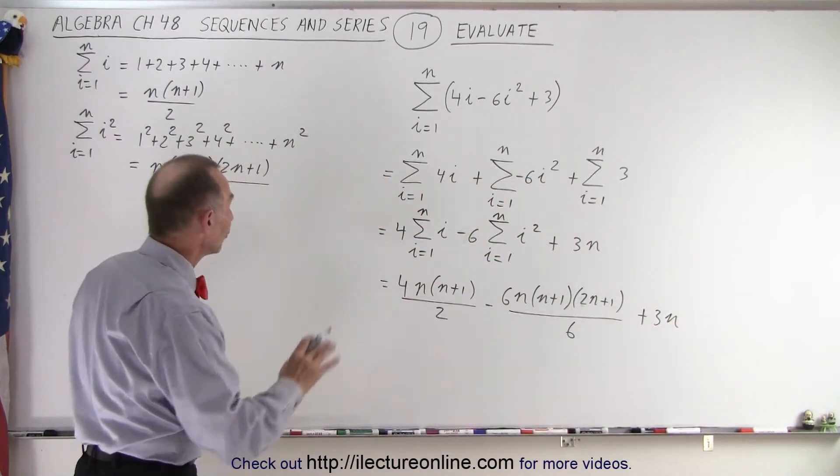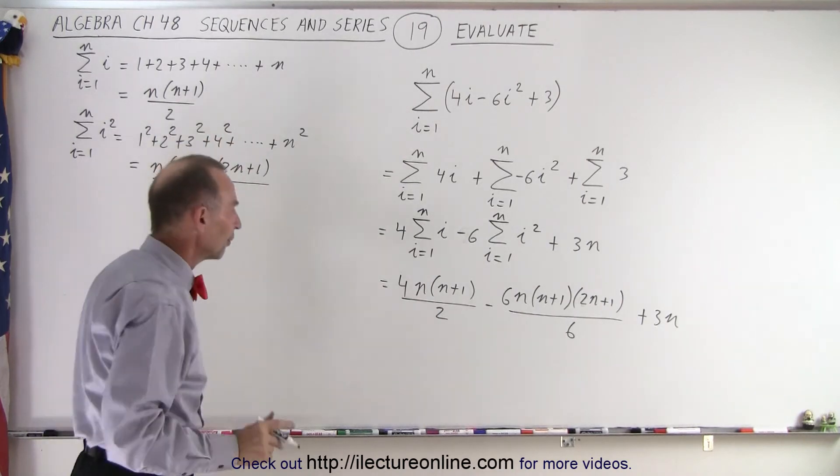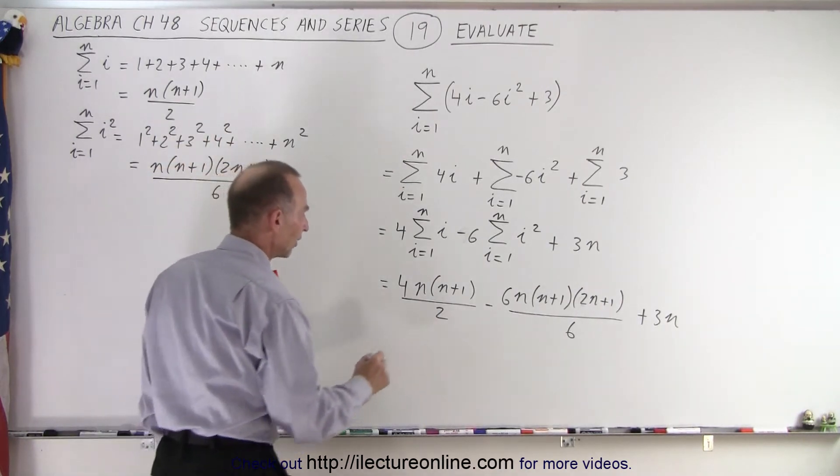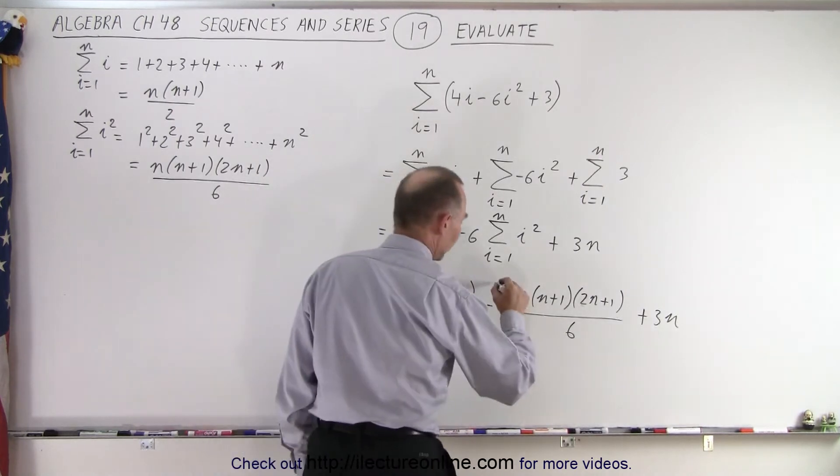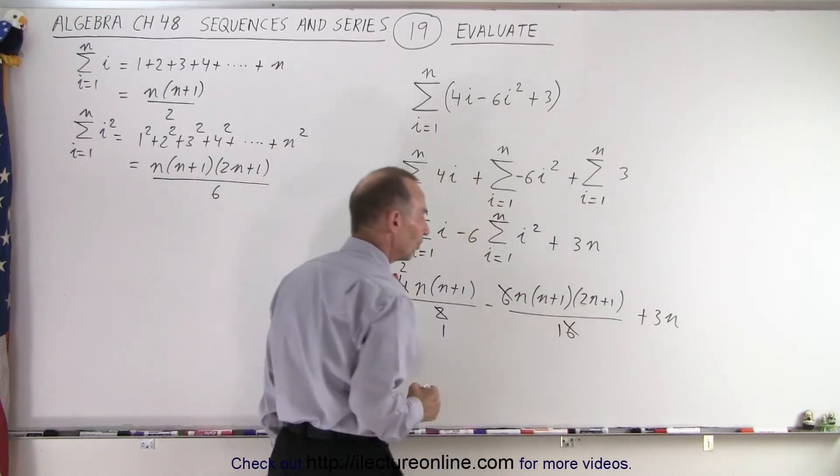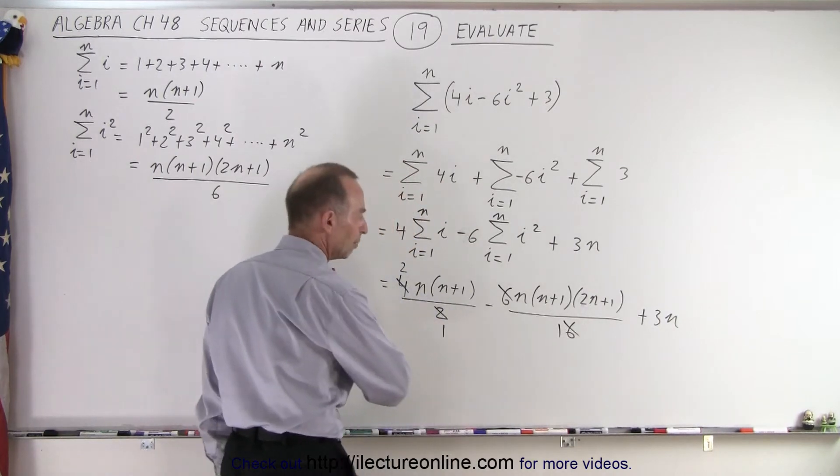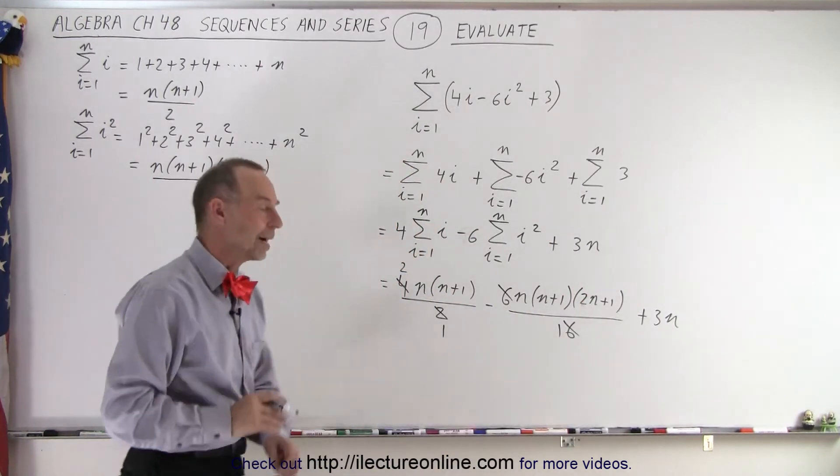Notice how much easier it is to remember what those two series are equal to. Now here we can simplify: this 2 becomes a 1 and this becomes a 2. This 6 and this 6 cancel out. So now I can go ahead and multiply all that out and collect common terms.